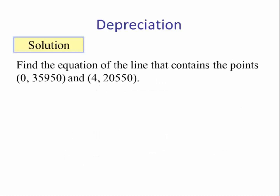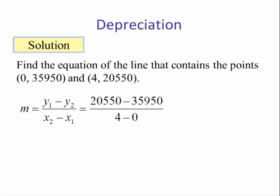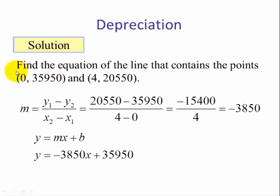We find the equation of the line through these points using the slope formula. The change in Y is 20,550 minus 35,950; the change in X is 4 minus 0. This yields negative 15,400 over 4, which equals negative 3,850. Writing in Y = MX + B form, the slope is negative 3,850 and the Y-intercept is 35,950. In our variables: V = negative 3,850T + 35,950.